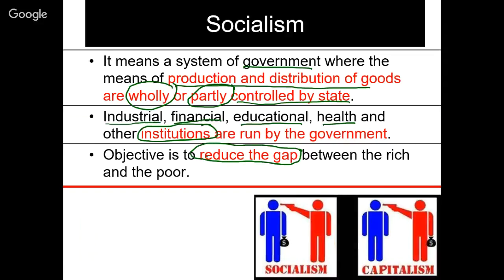Originally, the rich had money while the poor had weapons. Now, with capitalism, both money as well as weapons are with rich people. There is a need for reversal of this inequality of wealth in society.